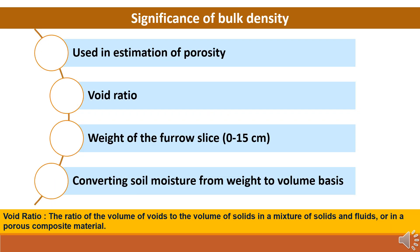The significance of bulk density: it is generally used in estimation of porosity, void ratio, weight of the forest litter up to a depth of 0 to 15 centimeters, and converting soil moisture from weight to volume basis. The void ratio is the ratio of the volume of voids or pore spaces to the volume of solids in a mixture of solids and fluids, or in a porous composite material.